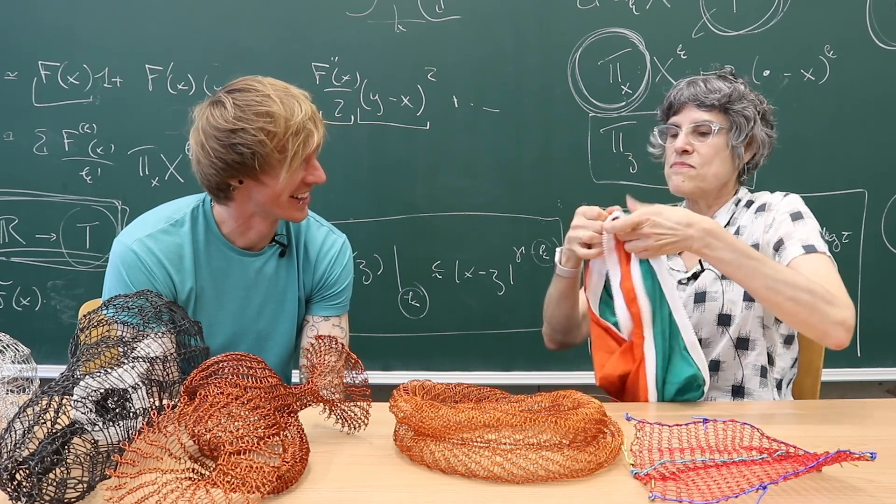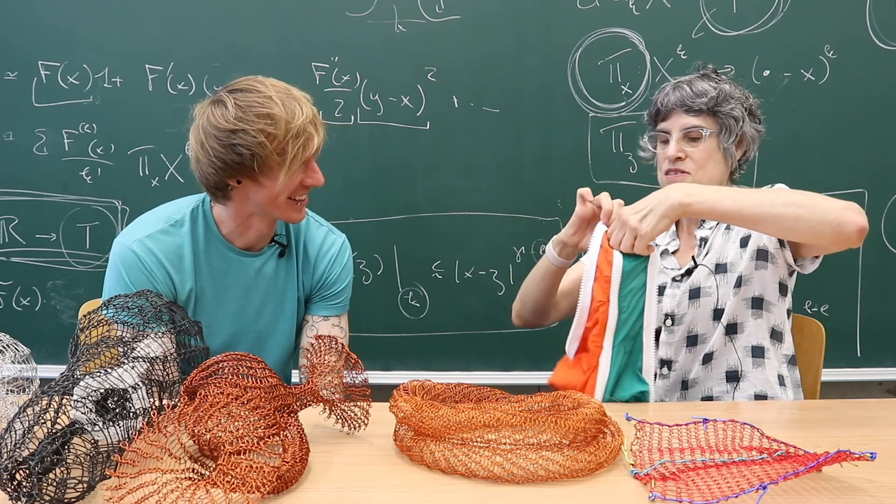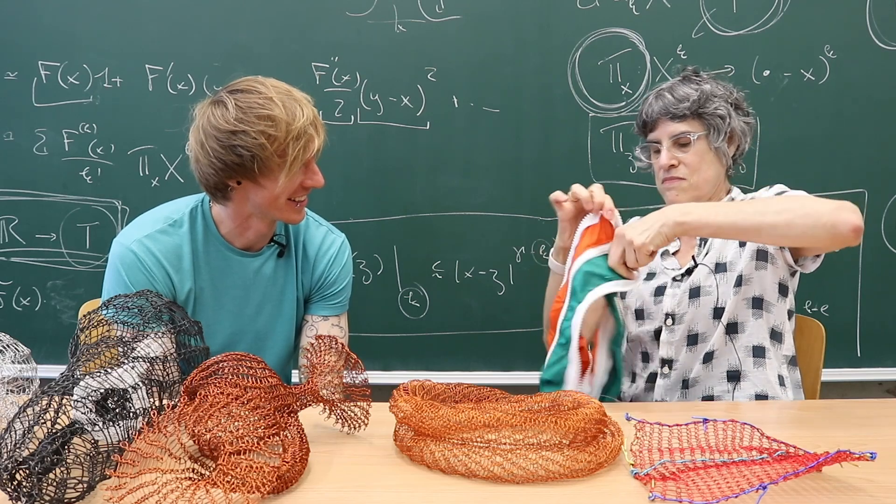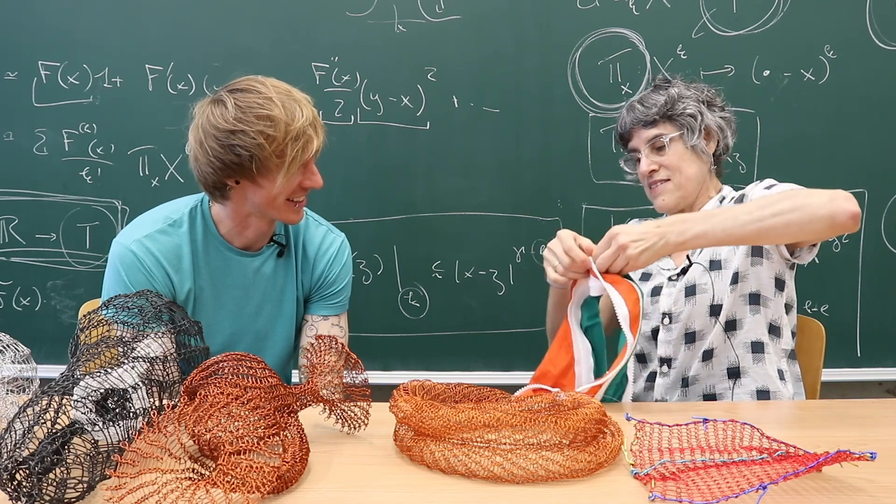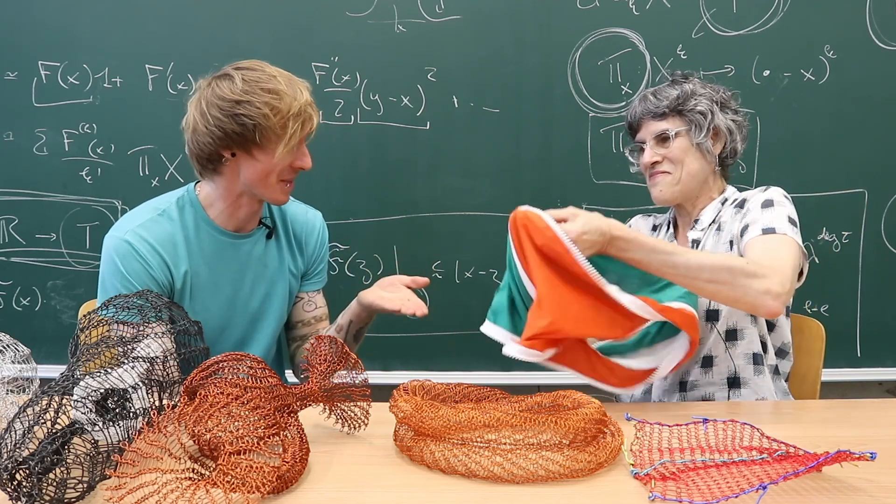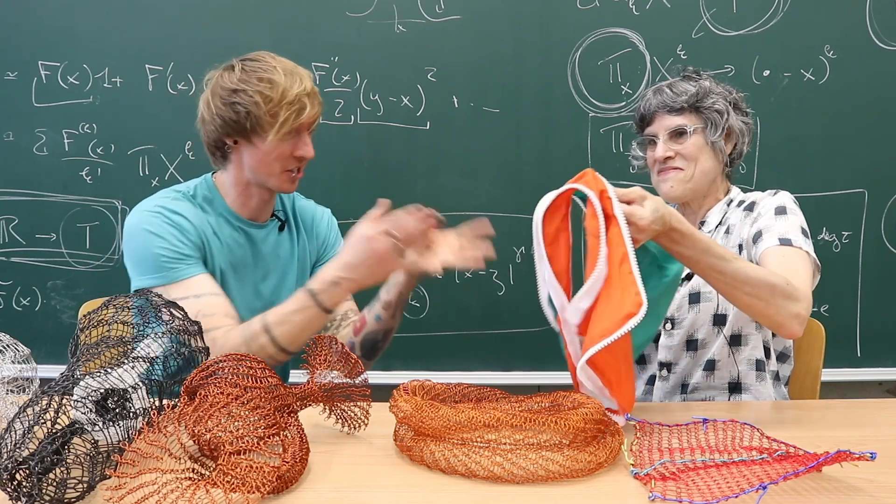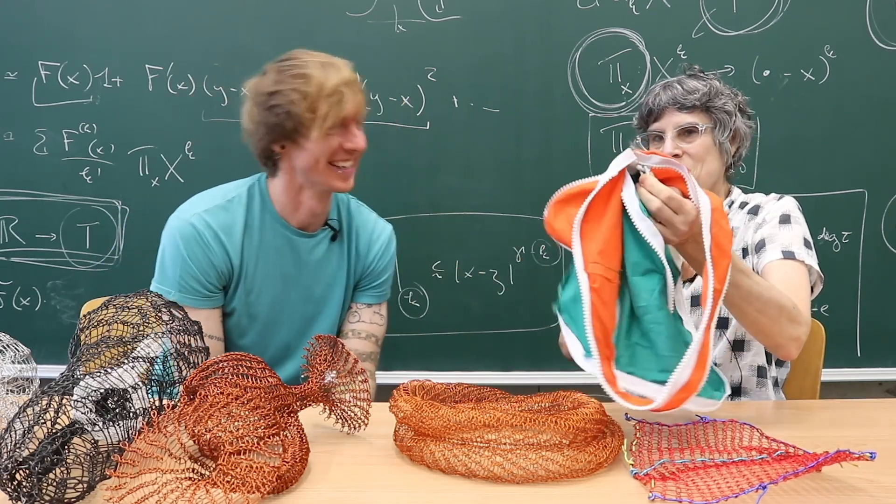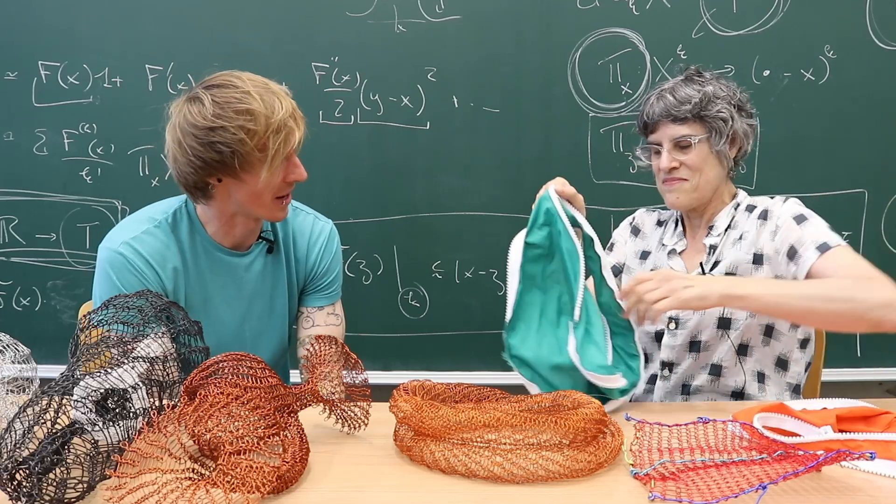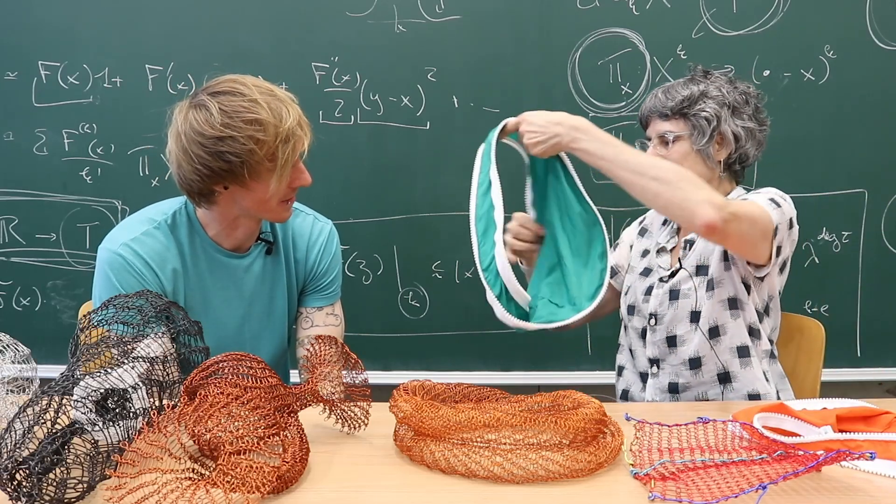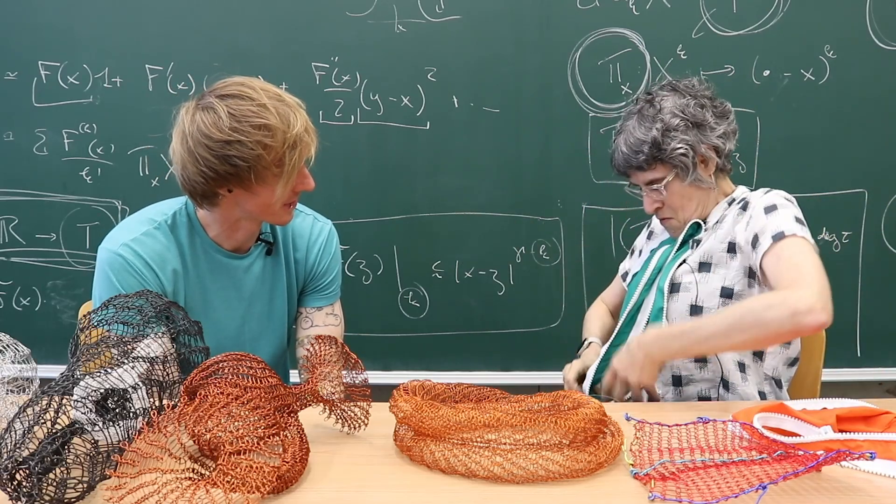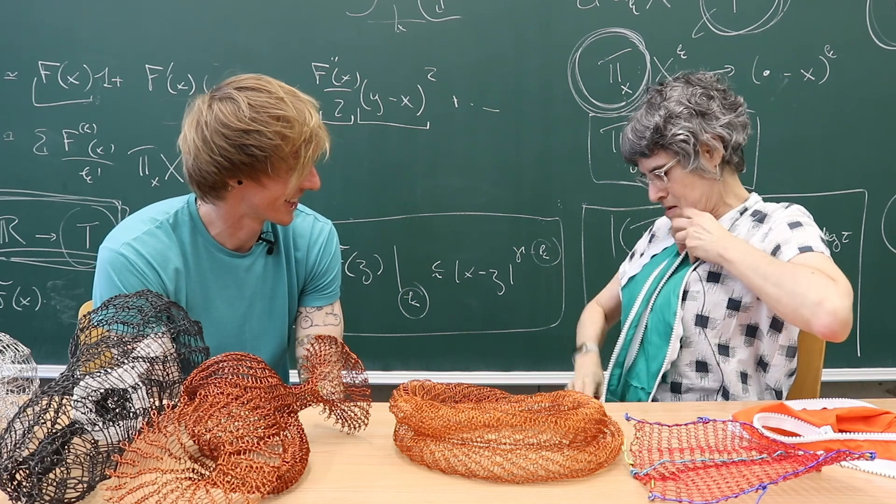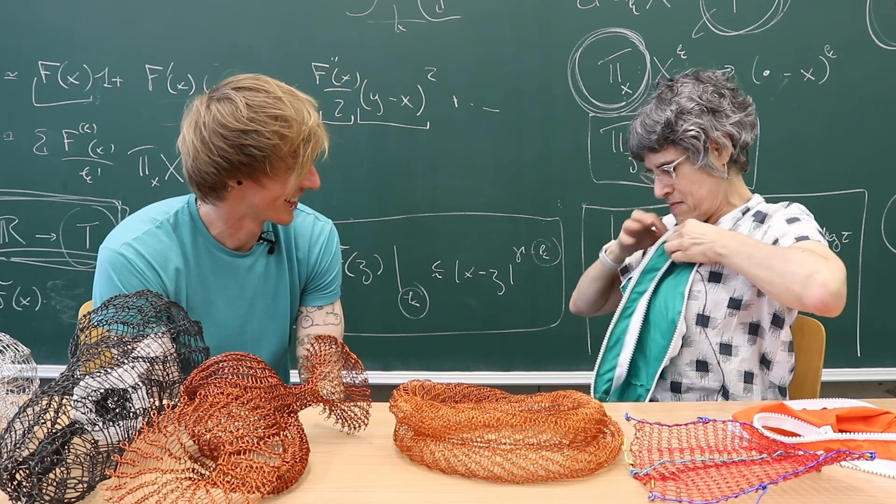But anyway, let me show you some trick of the Klein bottle. So I'm opening the Klein bottle. To the zipper. Even watching you unzip this, I'm imagining trying to actually sew. I can see why it causes a headache. Oh, it comes apart. Wow. Okay. So what do you think is this shape?